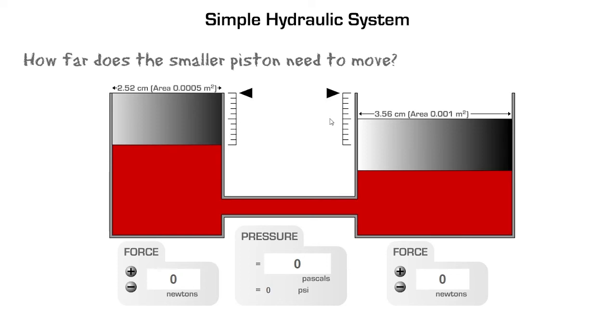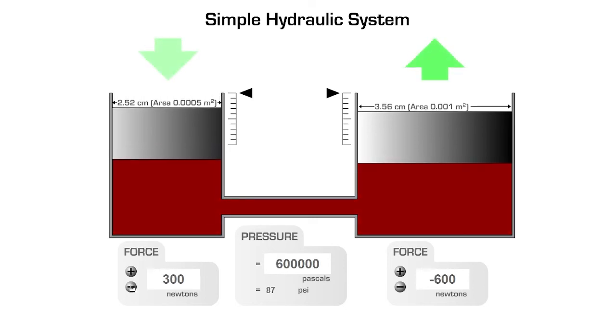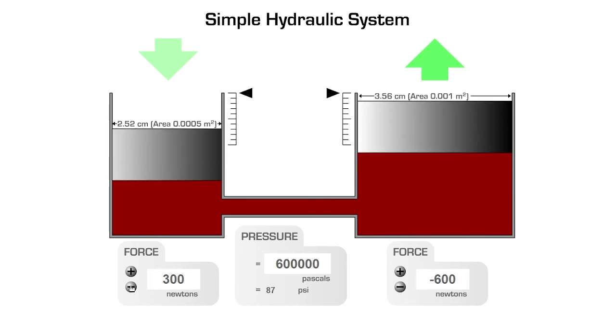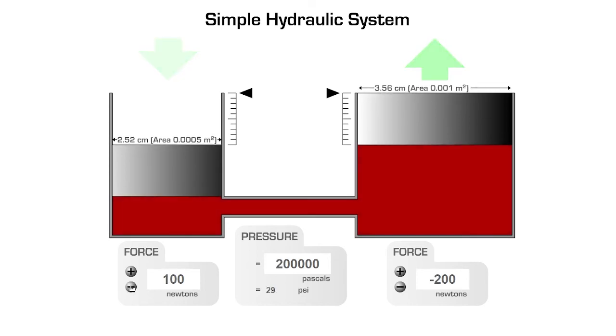Let's see. The smaller piston has moved by 10 divisions, twice as far as the larger piston. Were you correct?